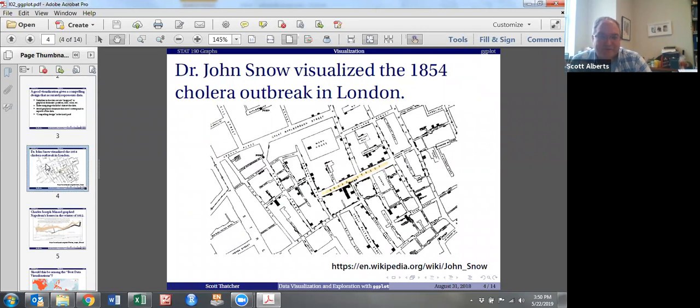Before he was in Game of Thrones, John Snow was one of the founders of epidemiology or the idea that we could study public health through statistics. And there was a cholera outbreak. And what he did is he took a map of London and he started putting dots where everyone who had cholera was. And he realized that there was a water pump right here in the middle.